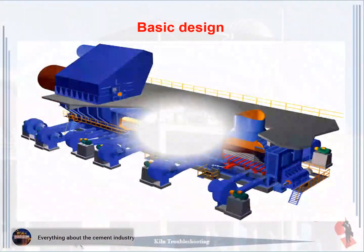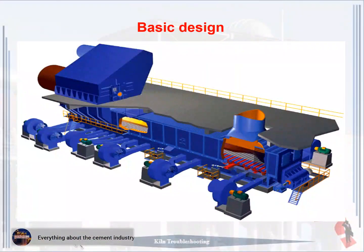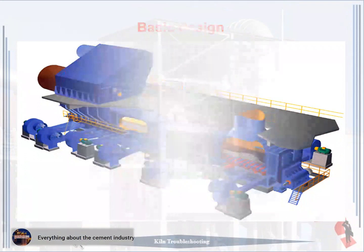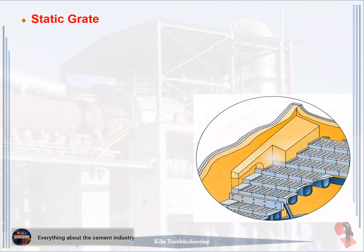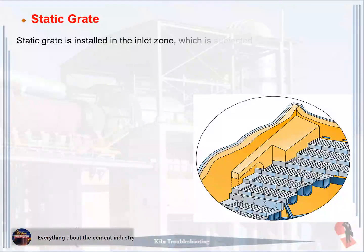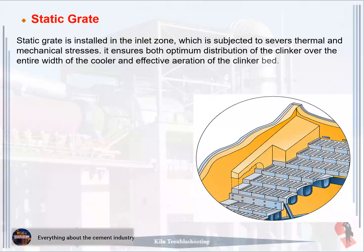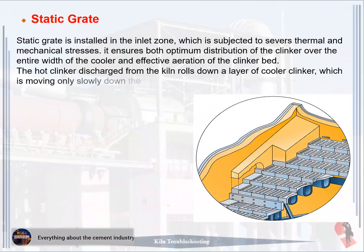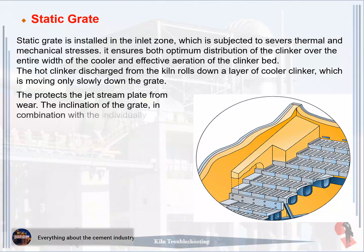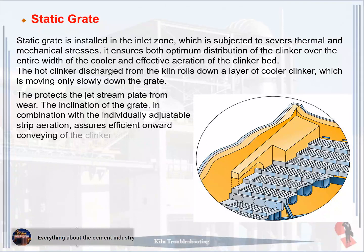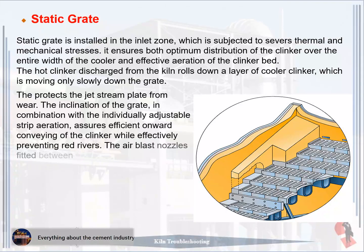Basic design: This picture shows the general shape of the clinker cooler. The static grate is installed in the inlet zone, which is subjected to severe thermal and mechanical stresses. It ensures both optimum distribution of the clinker over the entire width of the cooler and effective aeration of the clinker bed. The hot clinker discharged from the kiln rolls down a layer of cooler clinker which is moving only slowly down the grate, protecting the jet stream plate. The inclination of the grate in combination with individually adjustable strip aeration assures efficient onward conveying of the clinker while effectively preventing red rivers.